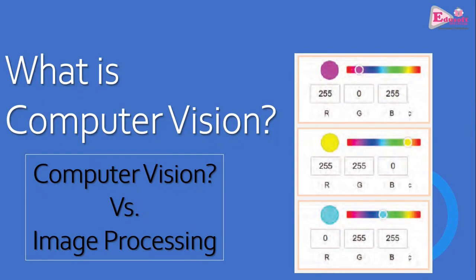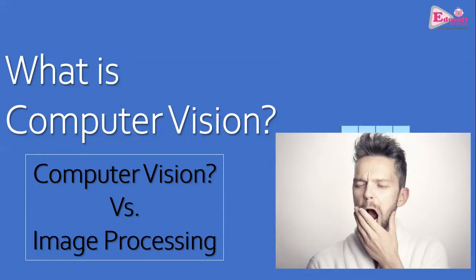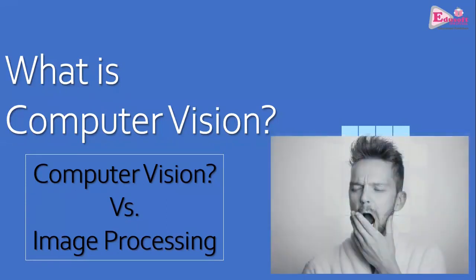When pixels are put together, they create an image. For example, if there is an image of a young man, the dense dark hair will have very low pixel intensity. But if that person is wearing a white shirt, those pixels will have maximum intensity, because maximum intensity of red, green, and blue combined together makes white.